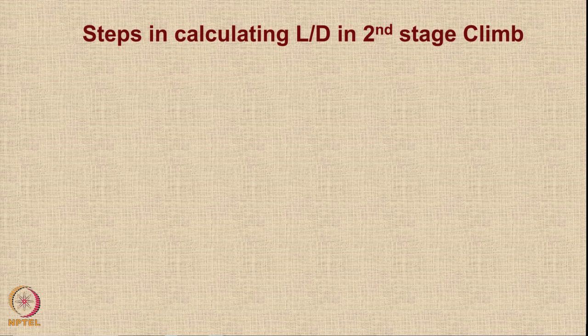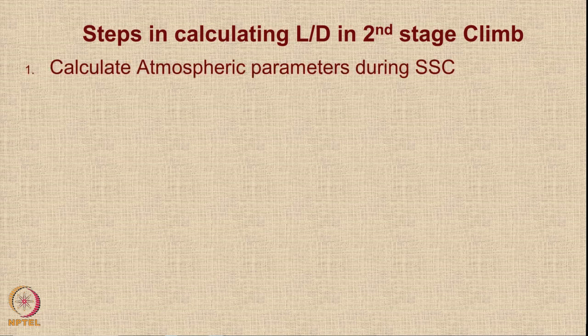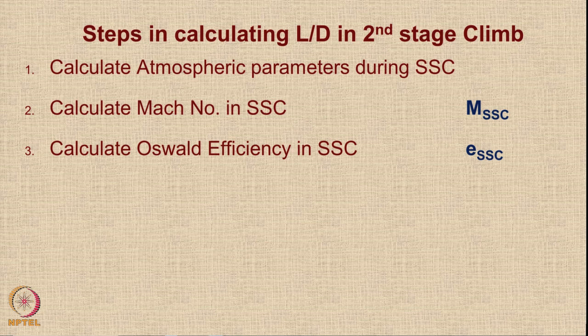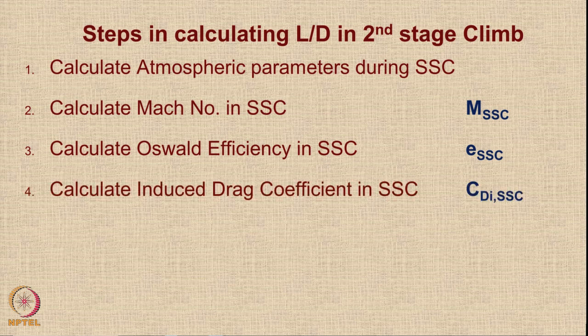The L/D calculation in the second stage climb happens in about 5 steps. First, since the second stage climb occurs at ISA+15°, we calculate atmospheric parameters. Then we calculate the Mach number in the second stage climb (MSSC). Next, we calculate the Oswald efficiency at the SSC condition (ESSC) using the Mach number ratio formula, then the induced drag coefficient CDI = 1/(π × AR × E).